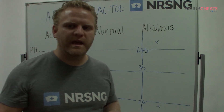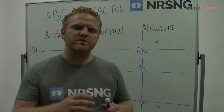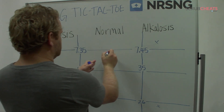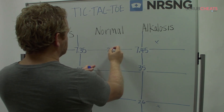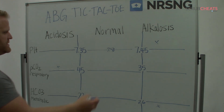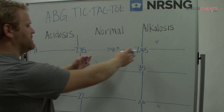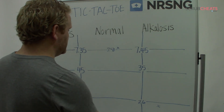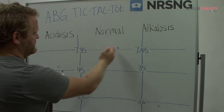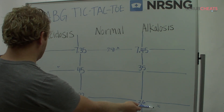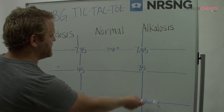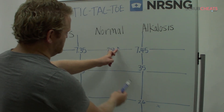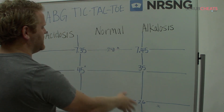If you have numbers that are way out of range but a normal pH, then you know your patient has fully compensated. Just look at which side of normal your pH falls on and determine the source by matching to that side. For example, if a patient has a pH of 7.42 — falling within the normal range — but the bicarb is elevated, the pH is just slightly to the alkalosis side, matching the metabolic (HCO3) column, so we have fully compensated metabolic alkalosis. Even if the CO2 was back over at 44, this is still the problem — fully compensated metabolic alkalosis.